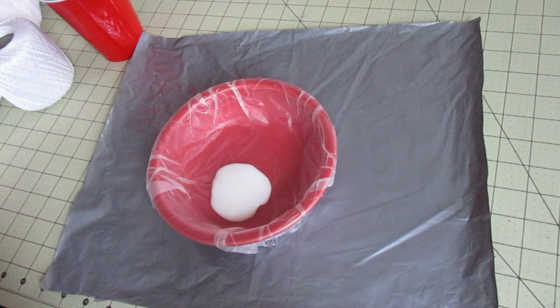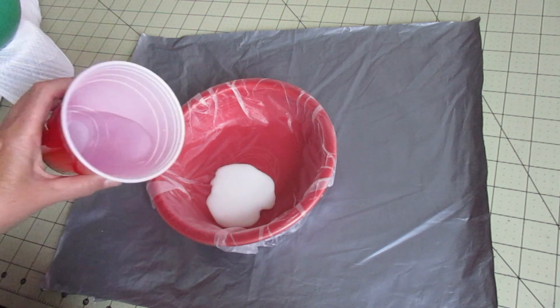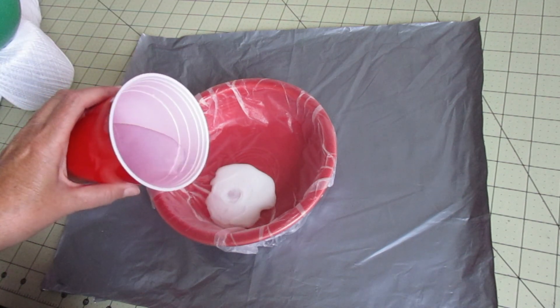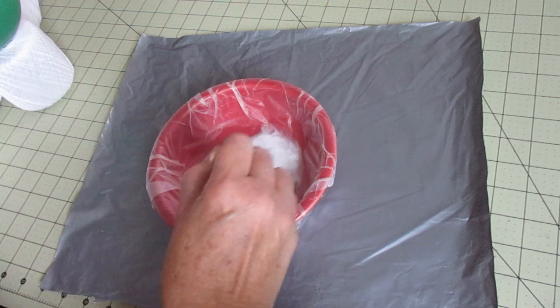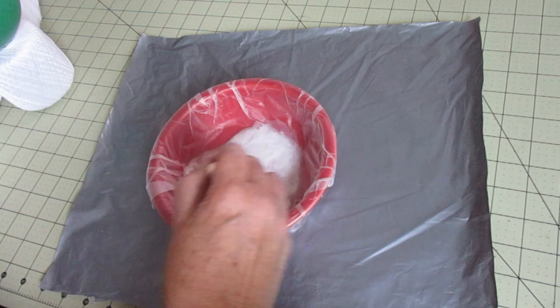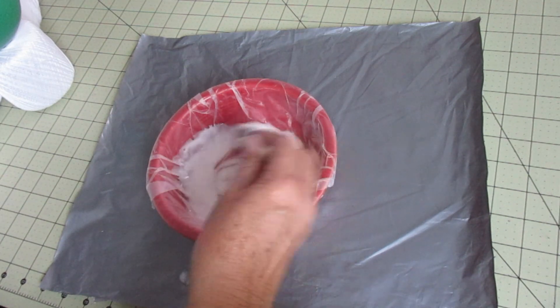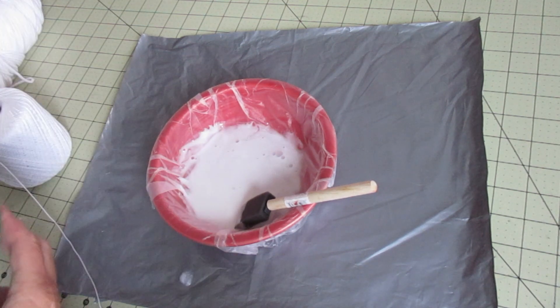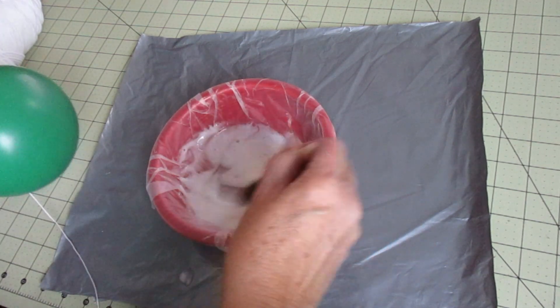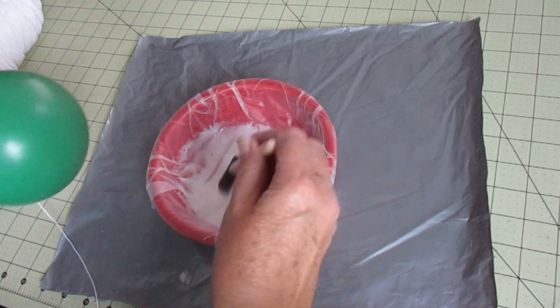Now you're going to add some water to it. You can start with half and half if you'd like or two parts glue to one part water. I like the thicker glue. It holds its shape better. Alright I like how that is. Now I'm going to use this cotton crochet thread. Okay this is going to get a little messy. So that's why we've protected our work surface here.